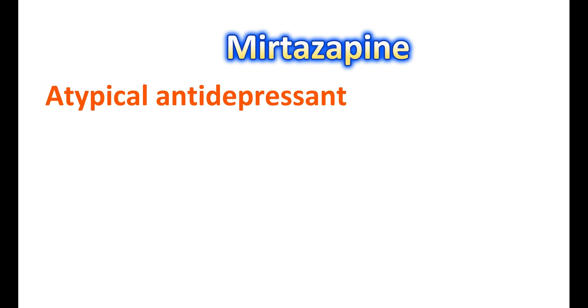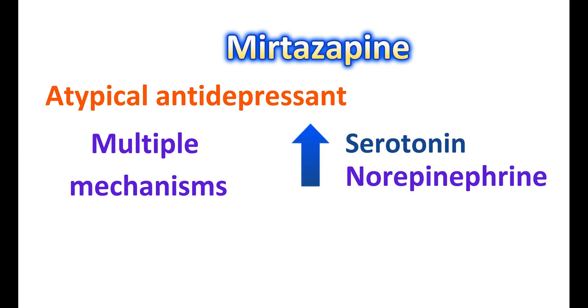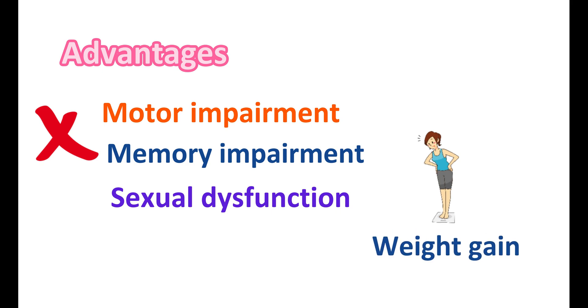Mirtazapine is another antidepressant classified as an atypical antidepressant — a new generation drug that acts by multiple mechanisms. Its main action is to increase levels of serotonin and norepinephrine, but it does so by blocking alpha-2-adrenergic receptors, which increases the release of these two mediators. Mirtazapine does not produce the motor impairment or memory impairment seen with benzodiazepines, and it lacks the sexual dysfunction observed with SSRIs and SNRIs. However, it can increase appetite, potentially resulting in weight gain.